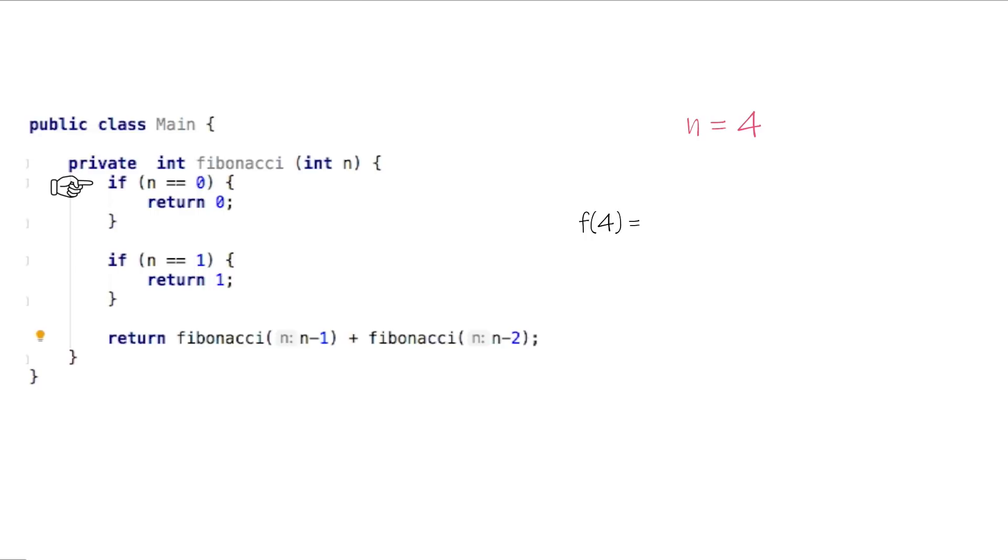If n is 0, that is false. If n is 1, also false. Then we end up returning Fibonacci of n-1 plus Fibonacci of n-2, which are Fibonacci 3 plus Fibonacci 2.